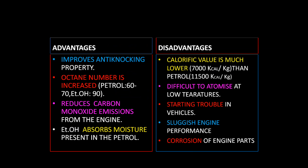The third advantage is that it reduces carbon monoxide emissions from the engine. The fourth advantage is that ethyl alcohol absorbs moisture present in the petrol. As for disadvantages, the calorific value is much lower compared to gasoline. Power alcohol's calorific value is 7,000 kilocalories per kg, whereas petrol's calorific value is 11,500 kilocalories per kg.